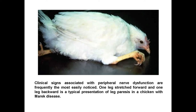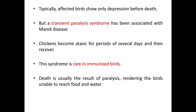In Marek's disease, the clinical signs associated with peripheral nerve dysfunction are frequently the most easily noticed. One leg stretched forward and one leg backward is the typical presentation of leg paralysis in chickens with Marek's disease. As shown in this picture, you can see one leg is stretched forward and one leg is stretched backward — this is associated with peripheral nerve dysfunction.